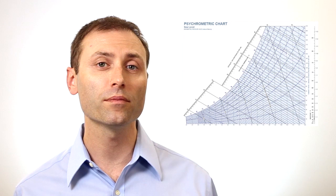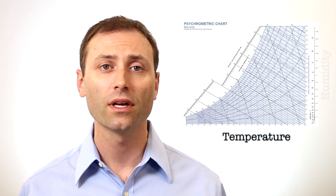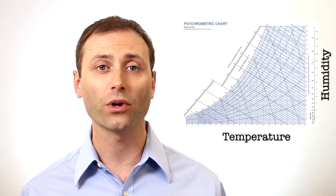How do you graph the temperature and humidity of air? The answer is with a psychrometric chart. The X axis along the bottom is for temperature and the Y axis is for humidity.